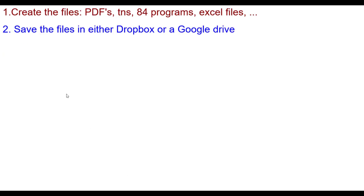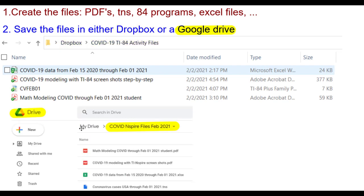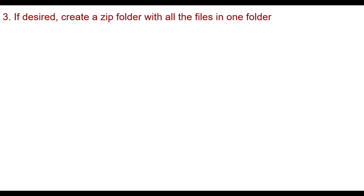Let's look at the first two steps. Say you created the files — PDFs and so on. We need to save the files in either Dropbox or Google Drive, and I'm going to do both just to show you how that's done. For example, in Dropbox I have a folder called COVID-19 TI-84 Activity Files. And then in Google Drive, I put in the TI-Inspire COVID files. Now if desired, create a zip folder with all the files in one folder — that helps the user quite a bit. Let me show you how that's done.